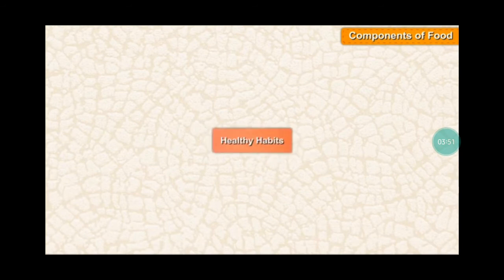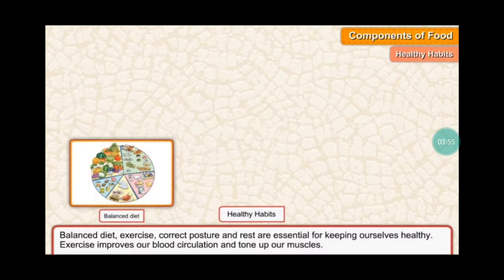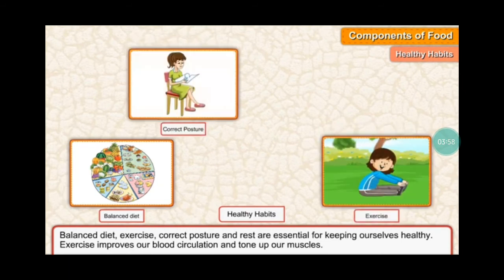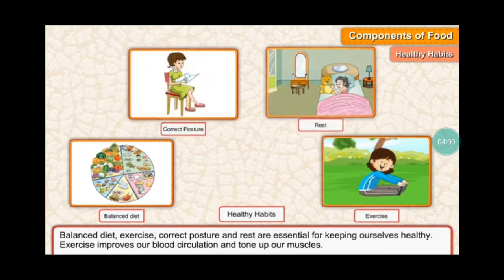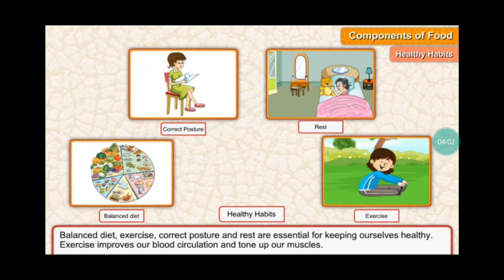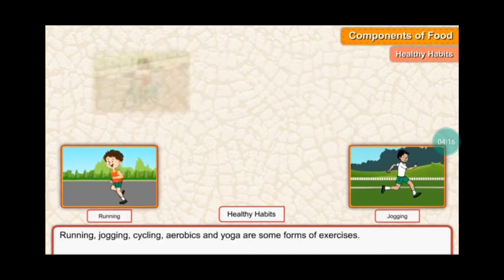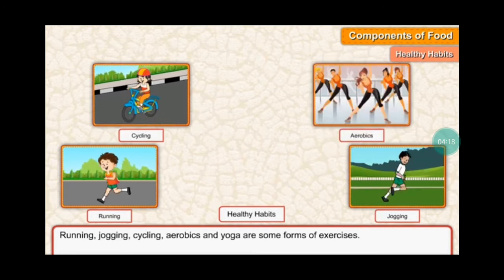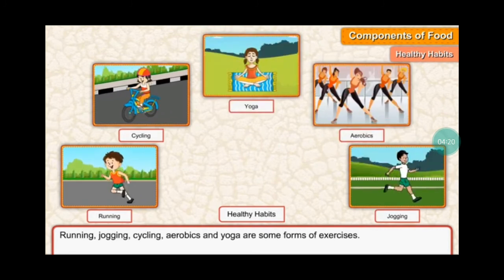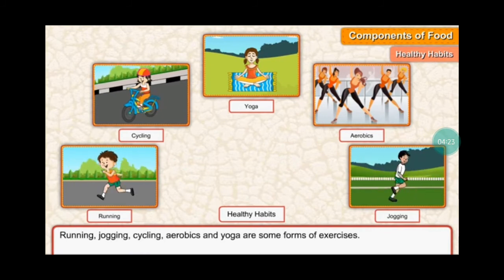A balanced diet, exercise, correct posture, and rest are essential for keeping ourselves healthy. Exercise improves our blood circulation and tones up our muscles. Running, jogging, cycling, aerobics, and yoga are some forms of exercise.